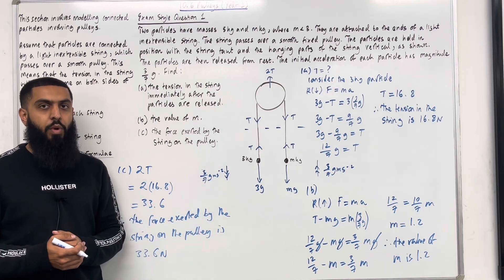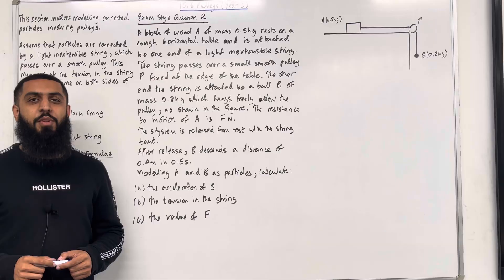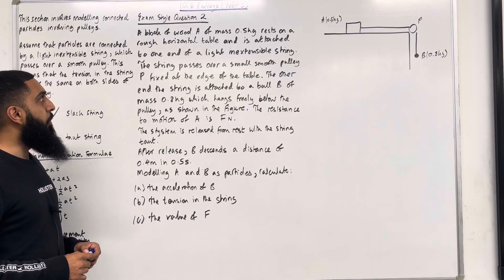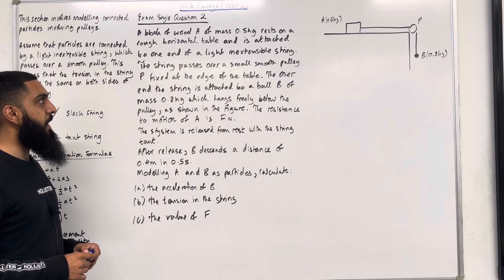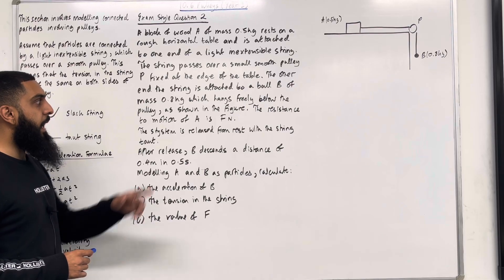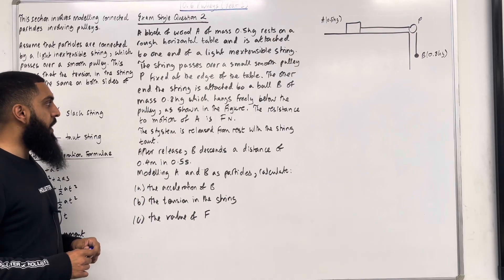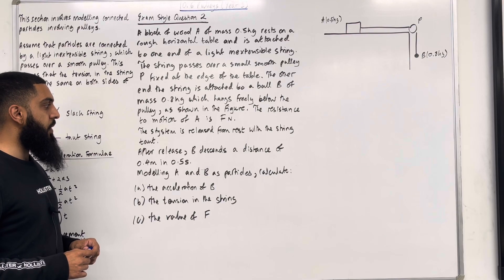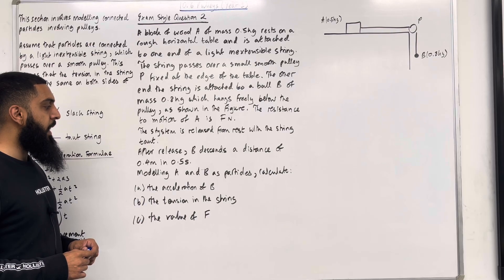This completes exam style question 1. Moving on to exam style question 2. A block of wood A of mass 0.5 kg rests on a rough horizontal table and is attached to one end of a light and inextensible string. The string passes over a small smooth pulley P fixed at the edge of the table. The other end of the string is attached to a ball B of mass 0.8 kg which hangs freely below the pulley. The resistance to motion of A is F Newtons. The system is released from rest with the string taut. After release, B descends a distance of 0.4 metres in 0.5 seconds. Modelling A and B as particles, calculate part A: the acceleration of B.